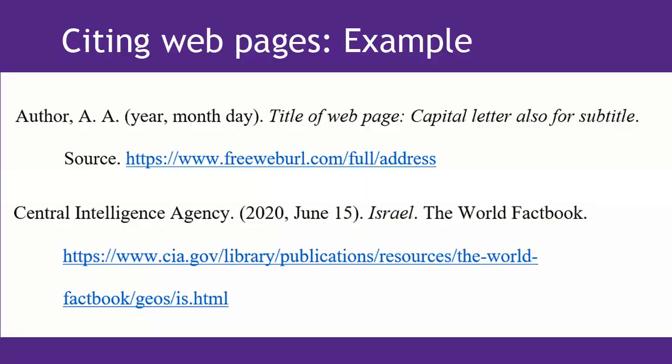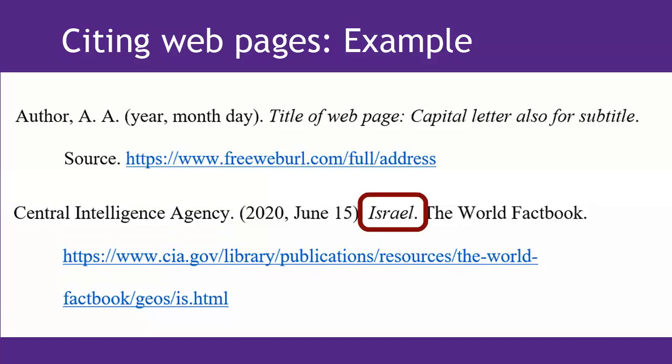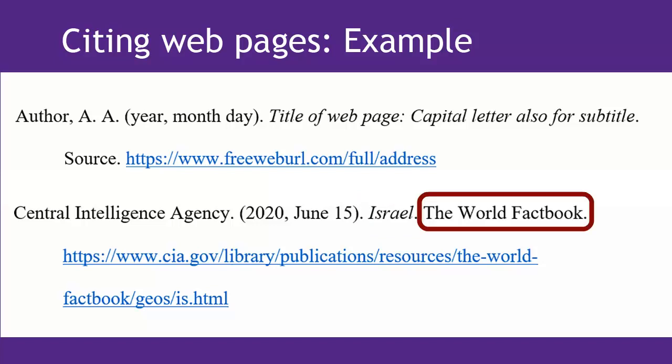Now we can create our citation. For a corporate author like this one, you'll want to capitalize every significant word of their name since it's a proper noun, rather than using the abbreviation — in this case CIA. Webpage titles are in italics and use sentence case capitalization, just like books, where you only capitalize the first word of the title, subtitle, and proper nouns. Then the name of the source is in non-italics font, and finally you end it with the full URL.